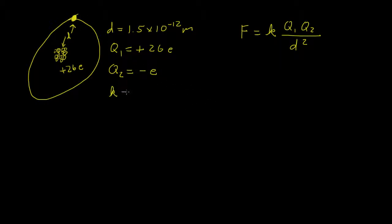Let's also remember that k is 9 times 10 to the ninth newtons meters squared per coulomb squared. And let's also remember that e is 1.602 times 10 to the negative 19th coulombs per electron.